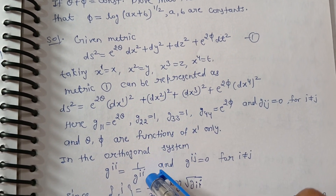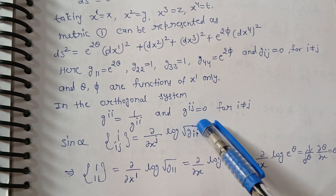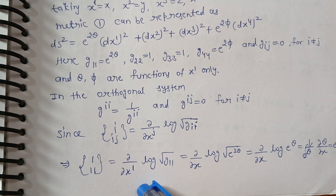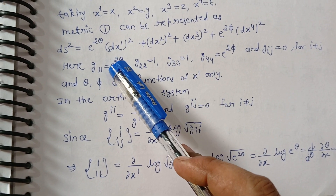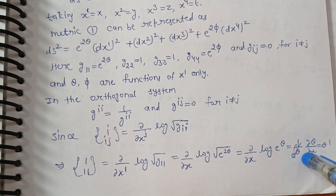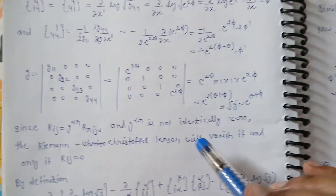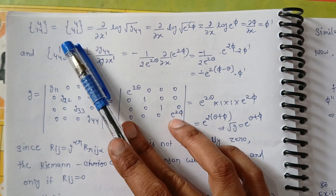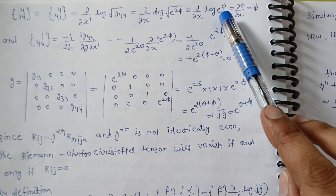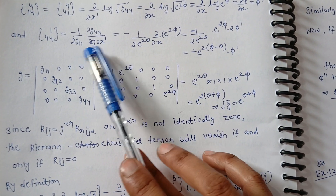We know that G^ii equals 1/G_ii when i equals j, and zero otherwise. The matrix is diagonal, so we consider only the equal-index case. We find G₁₁ equals e^(2 theta). Taking the square root, E^theta appears, and log and E cancel, giving us theta. Therefore del theta / del x equals theta-prime. Similarly for G₄₄ equals e^(2 phi), after elimination we get del phi / del x equals phi-prime.